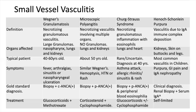Henoch-Schönlein purpura is a vasculitis due to IgA immune complex depositions and is the most common vasculitis in children. It presents with palpable purpura on the buttocks or legs, gastrointestinal pain and bleeding, and hematuria due to IgA nephropathy. It usually occurs following a viral infection in the upper respiratory tract, and the disease is rather self-limited.